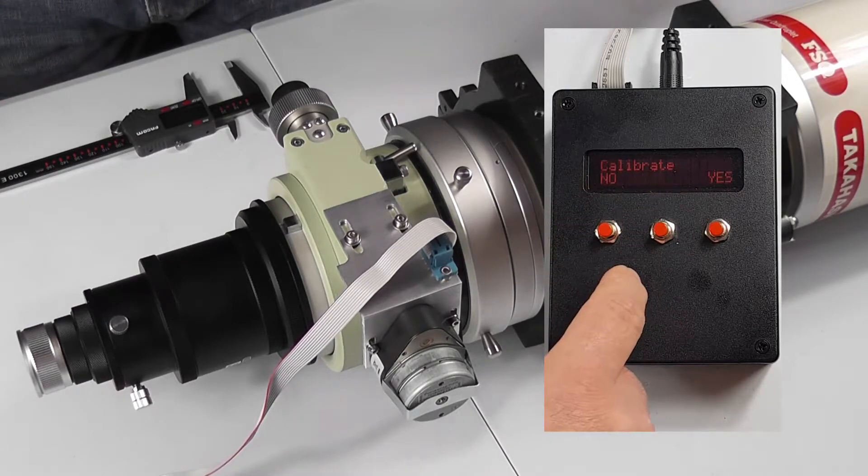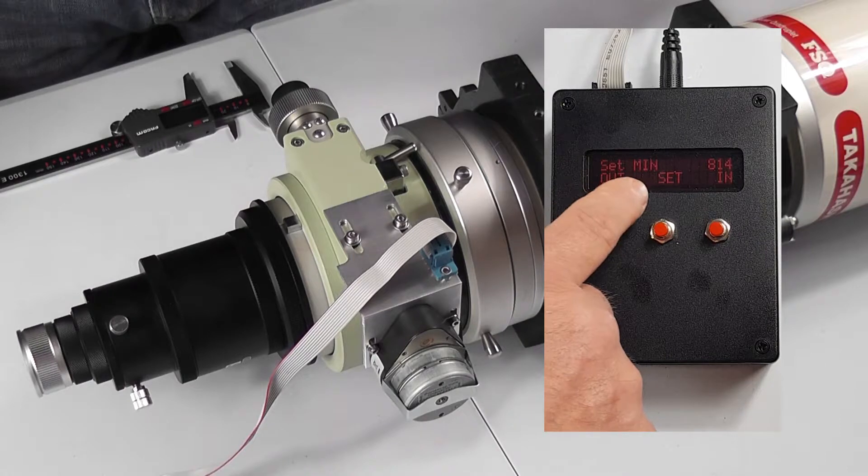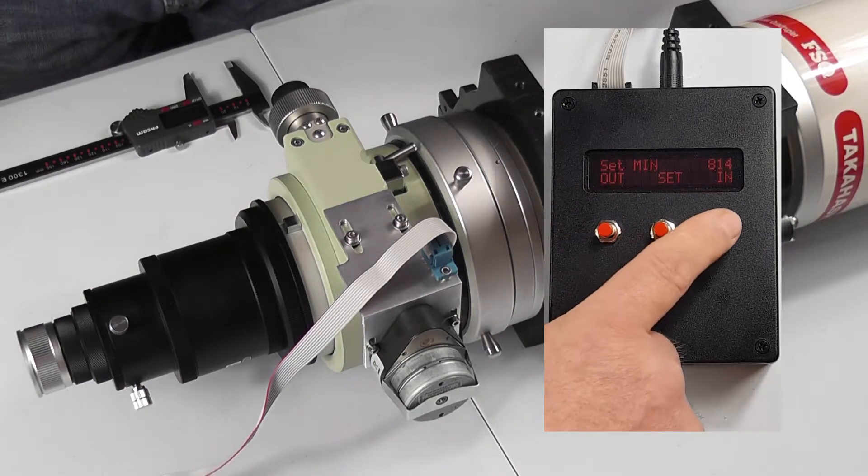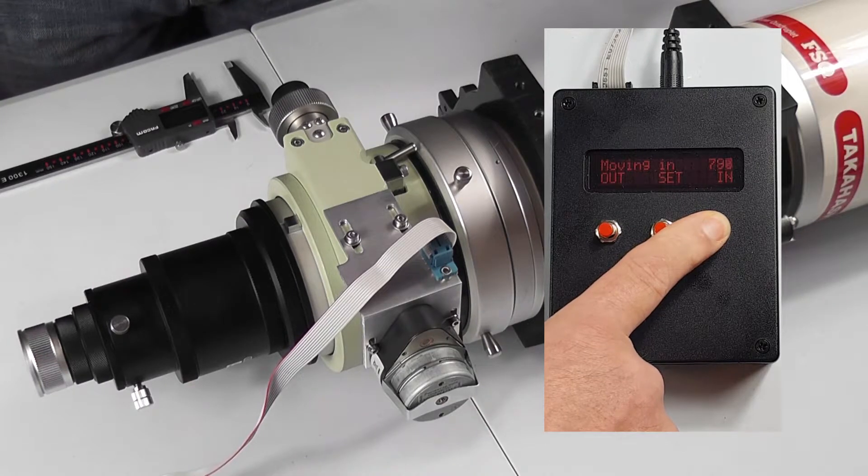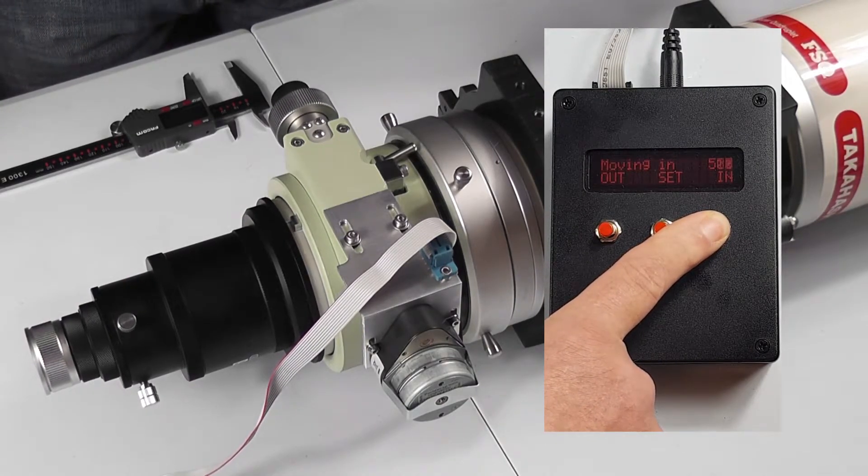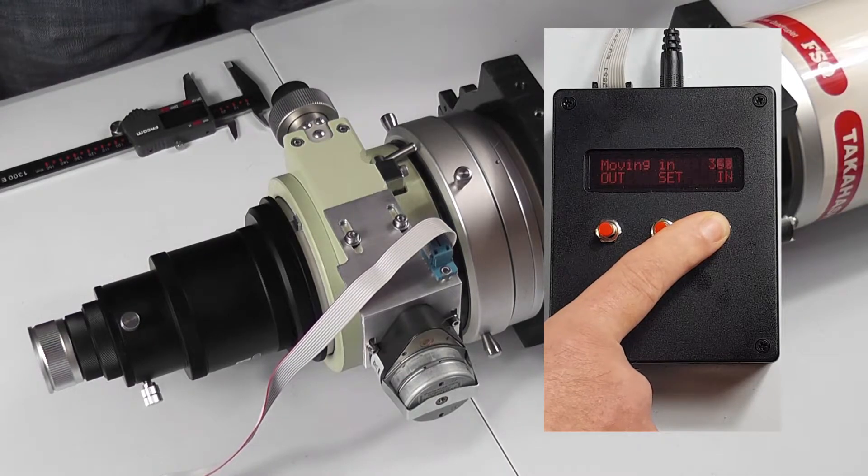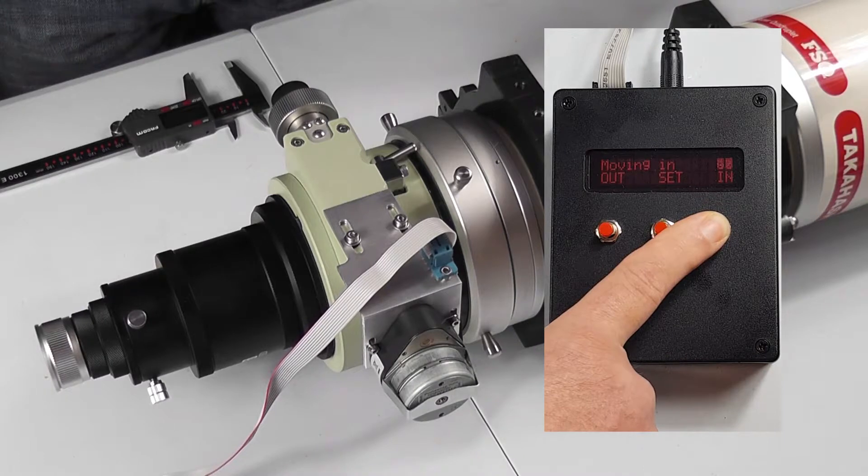Now the controller is telling us to set the minimum distance. So we're going to drive our focuser now in until we're just short of the stop in the inwards direction. Don't run it all the way to the stop—you just want to be about two millimeters short.